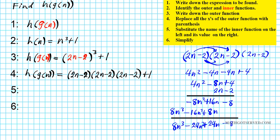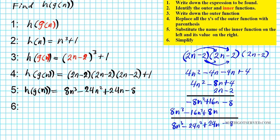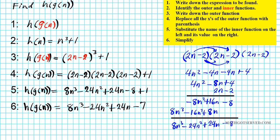So this is the expanded form. Now we insert it back into the equation: h of g of n is equal to 8n to the third minus 24n squared plus 24n minus 8, plus 1. Do not forget this positive 1 — just bring it down. The last two constants are like terms so we combine them: negative 8 plus 1 is negative 7. Our final result is 8n to the third minus 24n squared plus 24n minus 7.